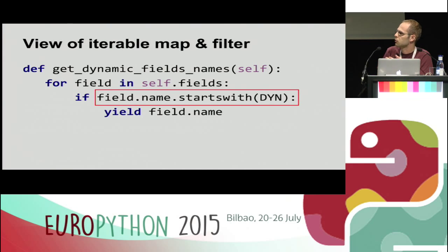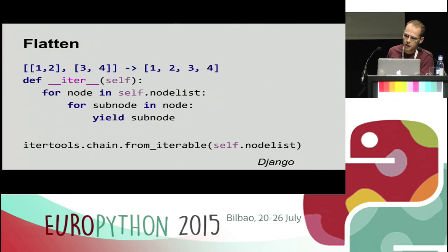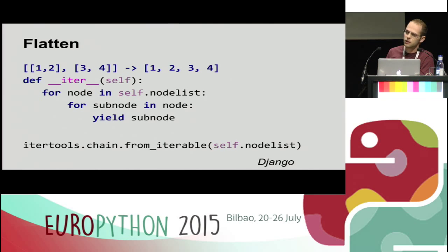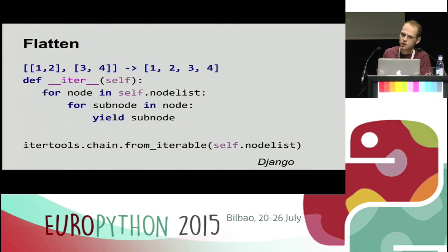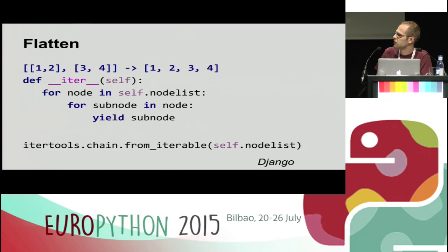Another very common way to write generators is to flatten lists. This code comes from the Django framework. If you have a list of lists and you want to iterate over all sub-elements as if it were a single stream of values, it's usually done with nested for loops, so they created this iterator to avoid copy-pasting those loops everywhere. It's actually a good and bad example because the itertools module provides a much easier way to flatten lists — that's how it can be done in one line. It's a very popular question on Stack Overflow.